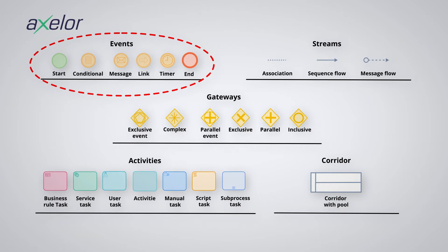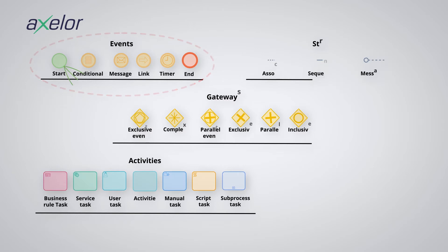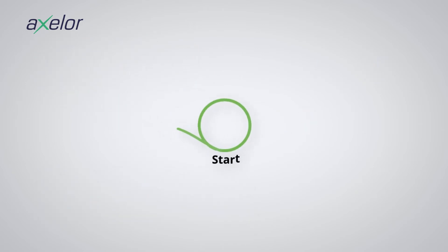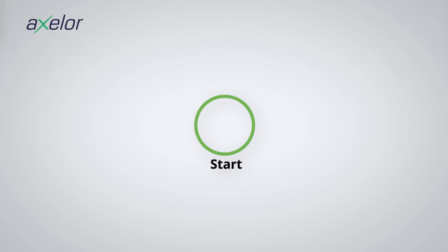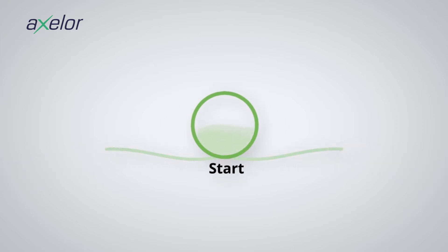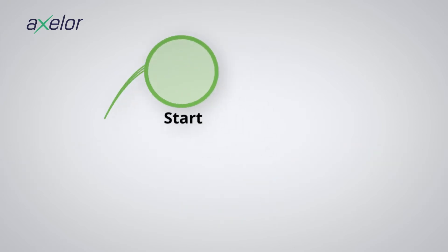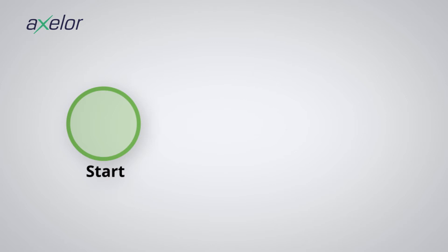There are three main categories of events. The beginning events are characterized by a thin outline. In these videos, you will find them identified in green. In fact, the standard does not specify any color for all the graphics.